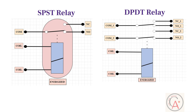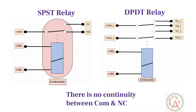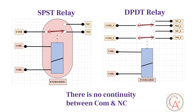When the coil is energized, or when an appropriate voltage is applied to the coil, there is no continuity between the common and normally closed contacts, and there is continuity between the common and normally open contacts. This state of the relay is known as the energized state.